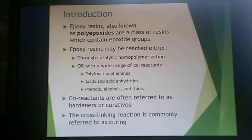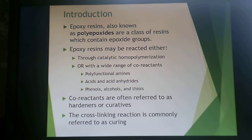Epoxy resins are also known as polyepoxides — a class of resins containing an epoxide group, which is a special ether group. They can be reacted through catalytic homopolymerization or through a wide range of co-reactants including polyfunctional amines, acids, anhydrides, phenols, alcohols, and thiols. Co-reactants are often called hardeners or curatives. Cross-linking these resins is commonly known as curing, as with all thermosets.